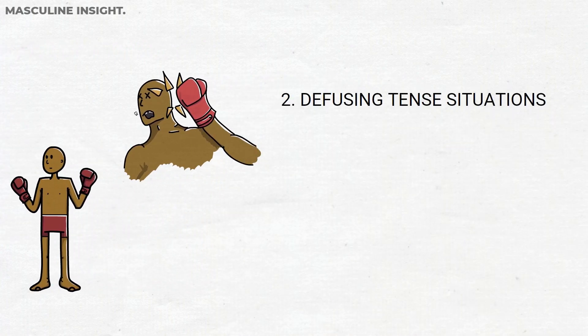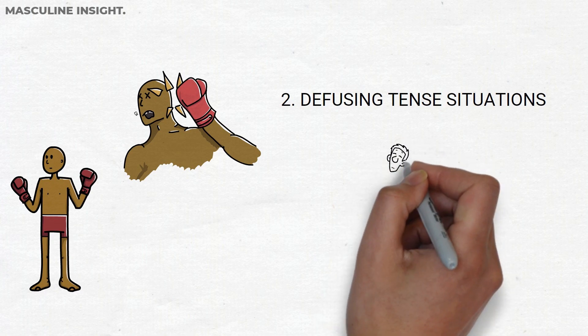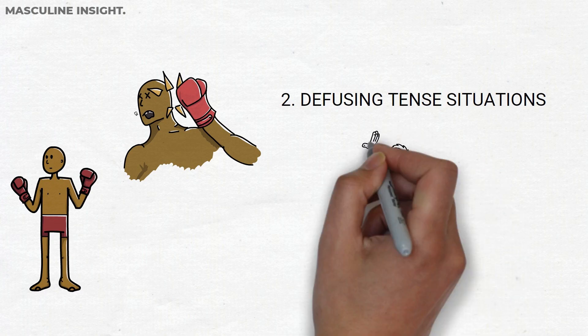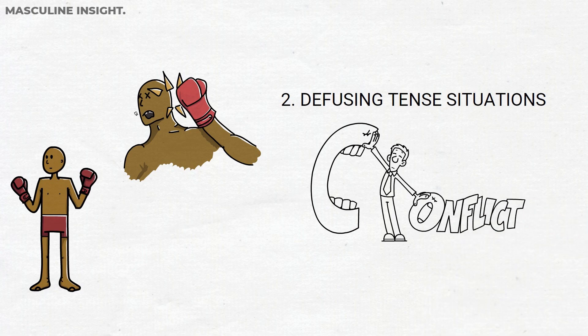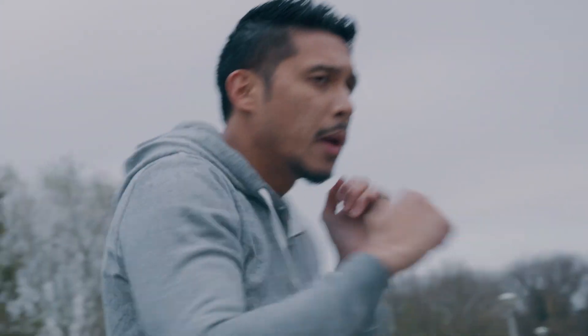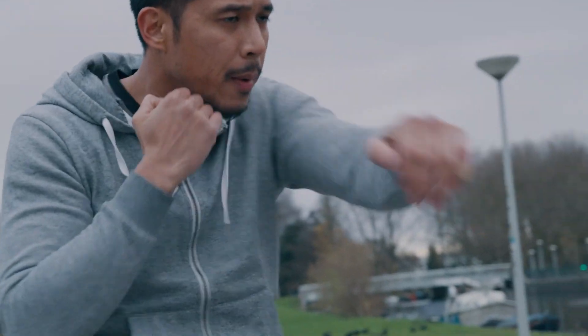2. The ability to defuse conflict. This skill directly follows knowing how to fight. Even if you are skilled in the art of fighting, you should always try to use diplomacy and persuasion to calm down a potentially escalating situation. Knowing how to de-escalate tempers or break up a fight makes you a leader.